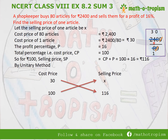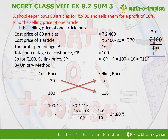We do cross multiplication: 100 × X = 30 × 116. Keeping X on the left-hand side and moving 100 to the right as division, it becomes X = (30 × 116) / 100. Cancelling one zero gives 348 / 10, and placing the decimal gives 34.8. Since this is in paise, we write it as Rs. 34.80. Therefore, the selling price of one article is Rs. 34.80.